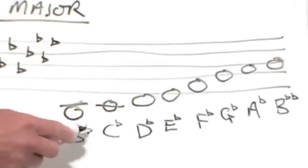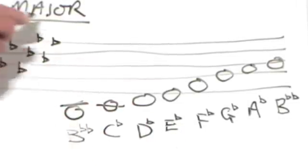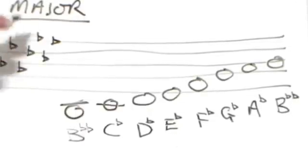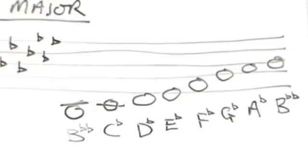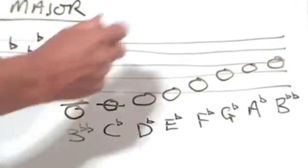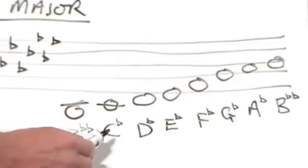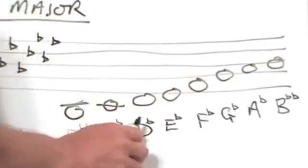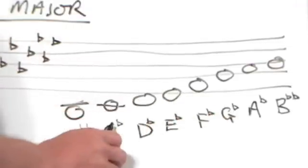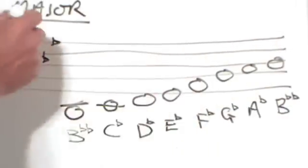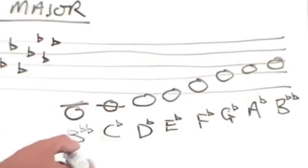So notice that method there, I'm just picking the flats up off this key signature for now. Remember that's the key signature that we've brought down with us from the previous key. Another way we could have done that was just to use the mnemonic battle ends and down goes Charles Farmer battle. But that's probably a safer way of doing it.